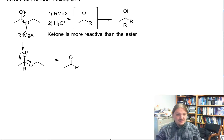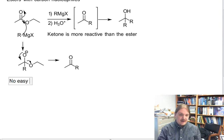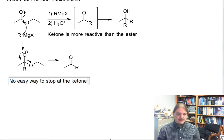Because esters are less reactive than Grignard reagents, there's just no easy way to stop at the ketone.